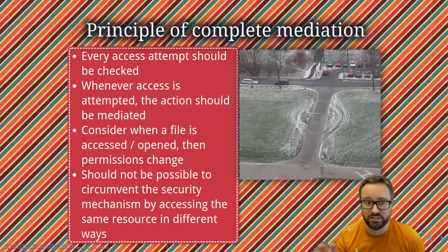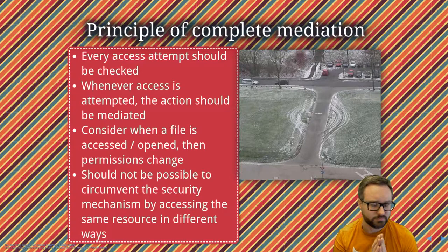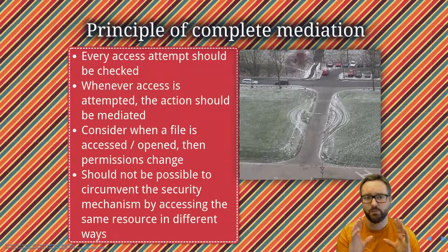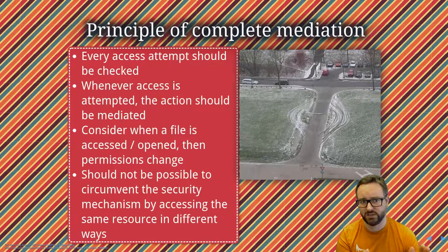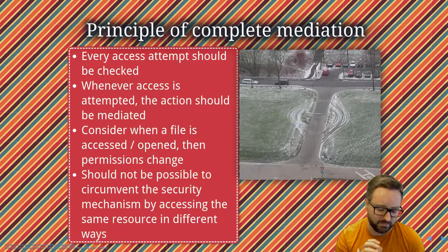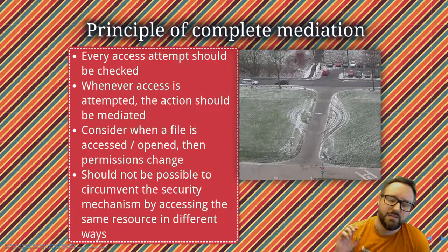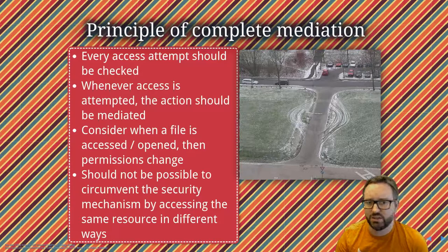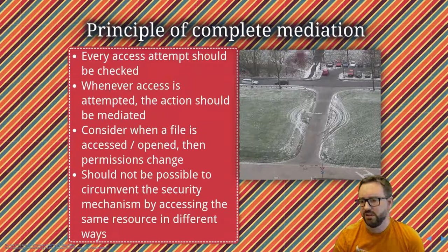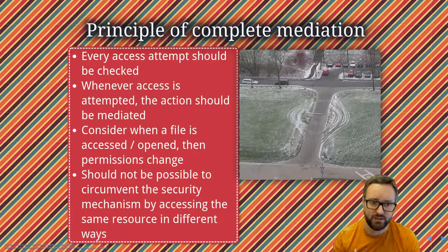This principle also applies where it should not be possible to circumvent the security. Within an organization, if important restricted information can be accessed via a shared network drive, local copies, a web interface, or another program, and these different pathways don't all perform the same security checks, then obviously the security is going to fall down.